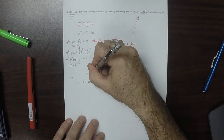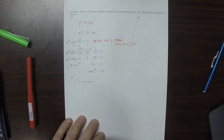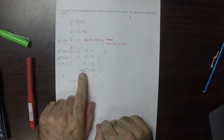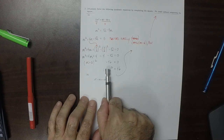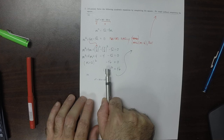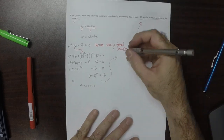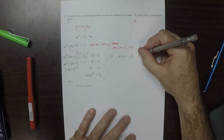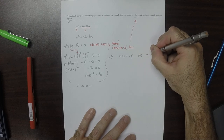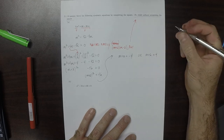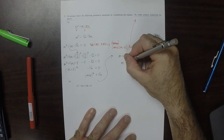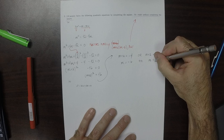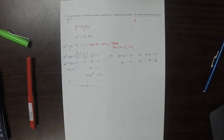So m plus 2 squared equals 16. There are two possibilities. What would square to 16? There are exactly two things: m plus 2 could be negative 4, or m plus 2 could be positive 4. So m is negative 6 or m is 2 — in complete agreement with the simpler factoring approach.